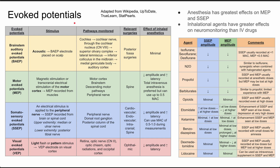The different types of evoked potentials include brainstem auditory evoked potentials, abbreviated as BAEP; motor evoked potentials, MEP; SSEPs, somatosensory evoked potentials; and visual evoked potentials, VEP.